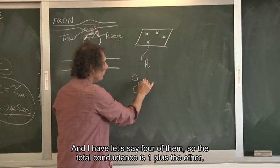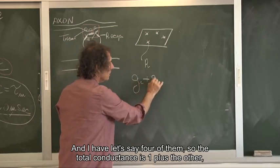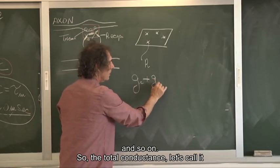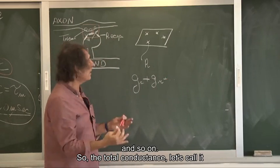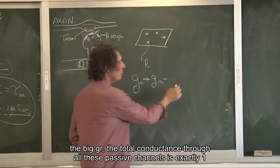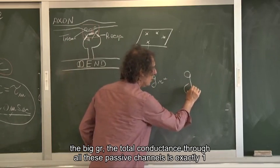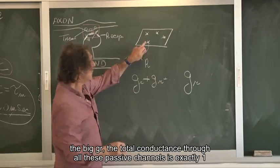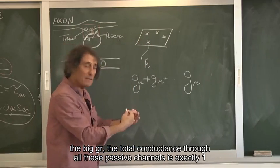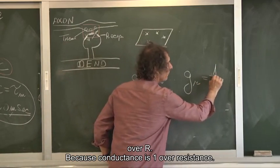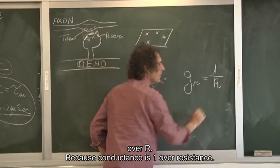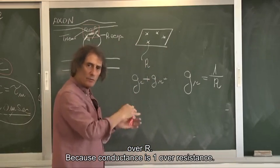And I have, let's say, four of them. So the total conductance is one plus the other, and so on. So the total conductance, let's call it the big GR, the total conductance through all these passive channels is exactly 1 over R. Because conductance is 1 over resistance.